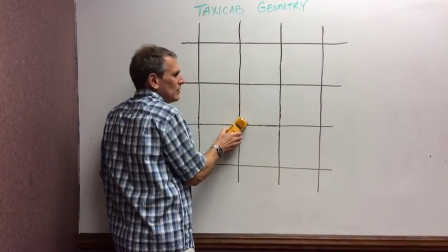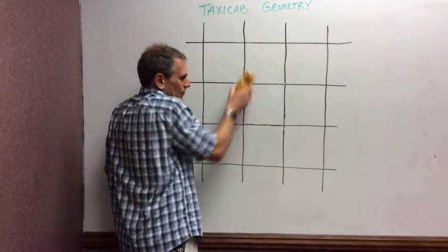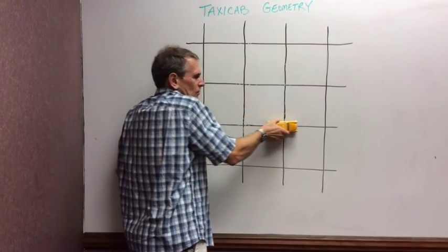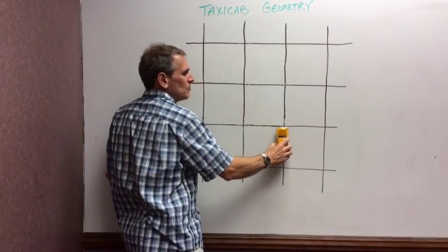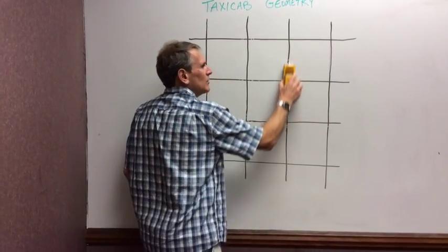Taxis don't go diagonal and knock down buildings. So thus the phrase Taxi Cab Geometry. We're going to find out the distance between two points by measuring only horizontal distance and vertical distance.